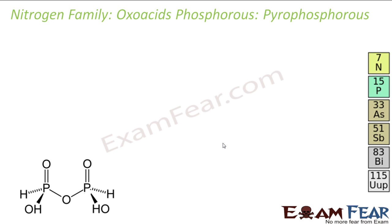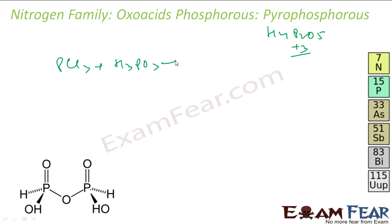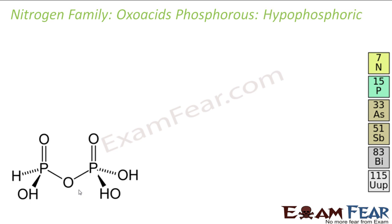The next is pyrophosphorus acid, with formula H4P2O5. The oxidation number of phosphorus is +3. To prepare this, you react PCl3 with H3PO3 to get H4P2O5. That is the structure of pyrophosphorus acid.